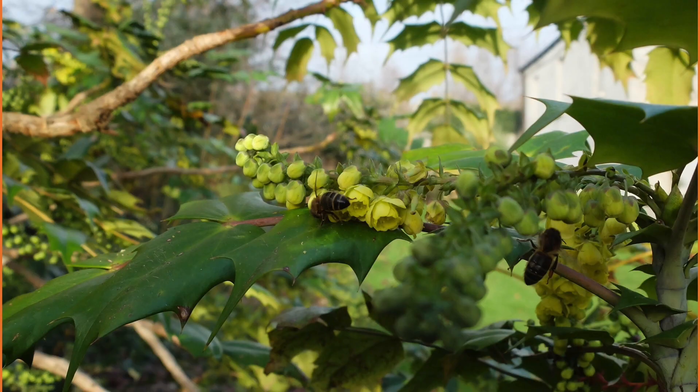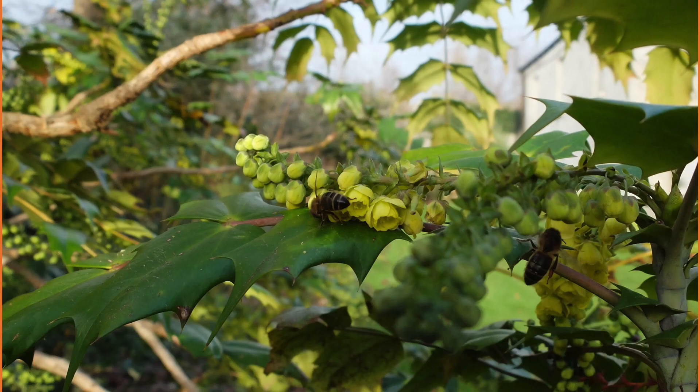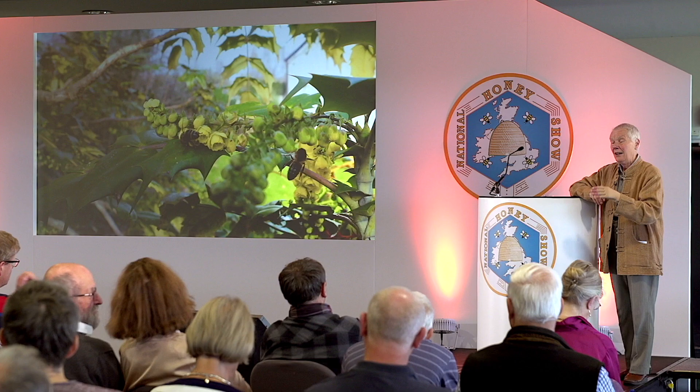Lonicera fragrantissima is untidy — it will shoot out in all directions, but it doesn't mind being cut. Stick it in a corner where you just like some green and leave it to go after it's flowered. This is Mahonia x Charity — smells of lily of the valley, a darling plant. Again, not tidy, but very hardy. I've seen more bumblebees on it than honeybees recently. All the plants I'm talking about are within 20 yards of my hive in the garden, so I can always watch.